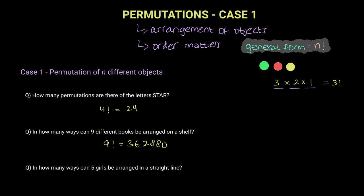And now for the last question, it says, in how many ways can five girls be arranged in a straight line? Well, there is nothing new about this question. We have five girls, we need to arrange them in a line. So it is just five factorial, which is 120.